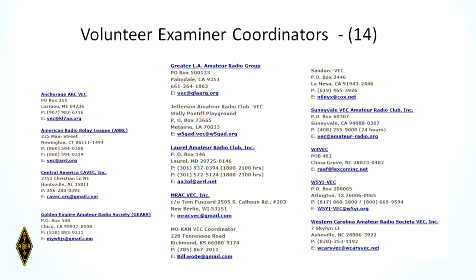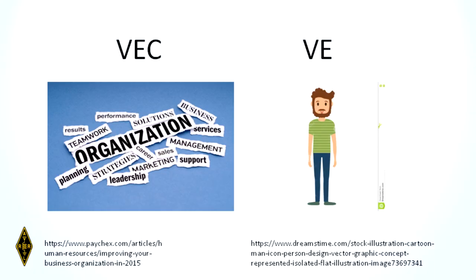There are 14 organizations that give amateur radio license exams. The big ones are the American Radio Relay League and the W5YI organization. A VEC — Volunteer Examiner Coordinator — is an organization. ARRL, W5YI, West Carolina Amateur Radio Service: those are VECs. A VE — volunteer examiner — is a person. Keep that in mind: a VEC is an organization, a VE is a person.